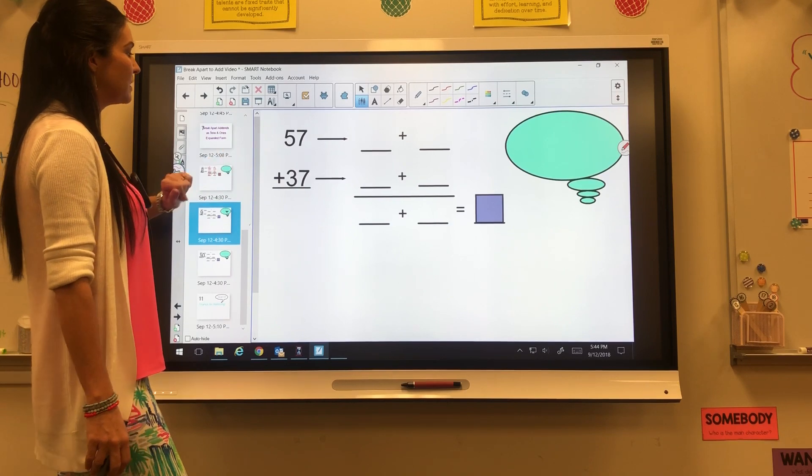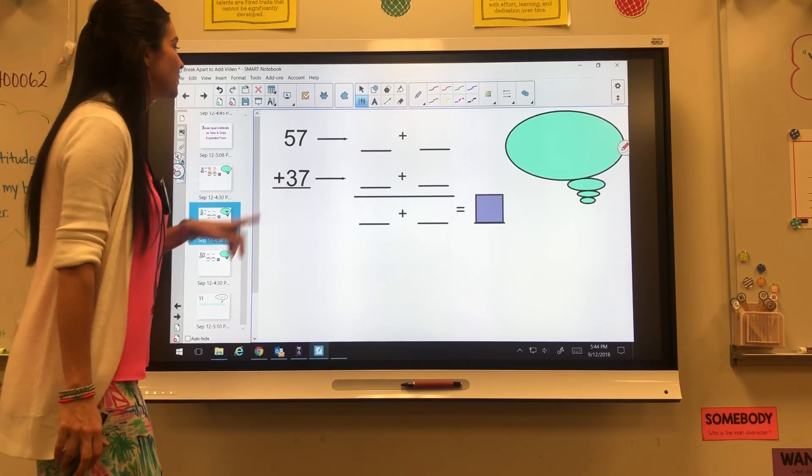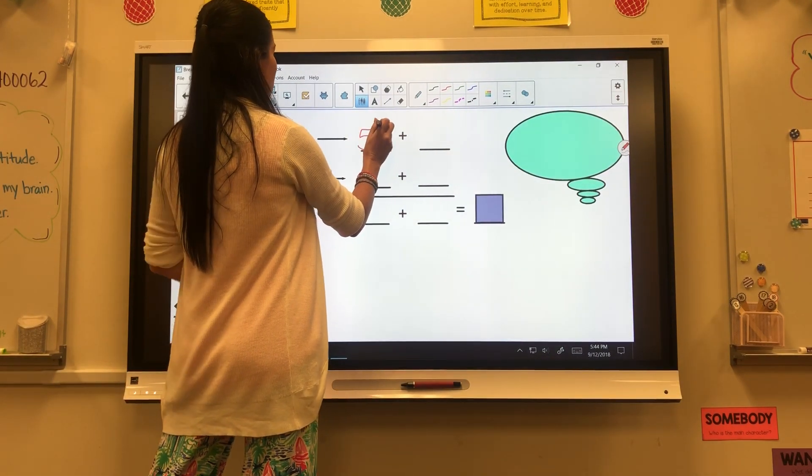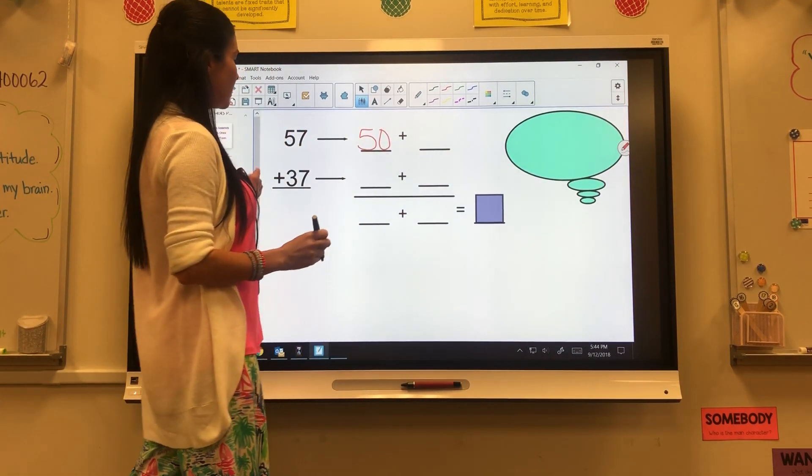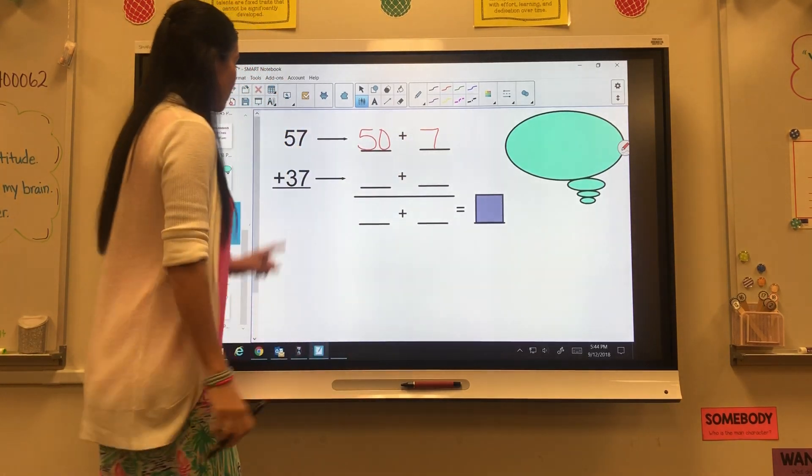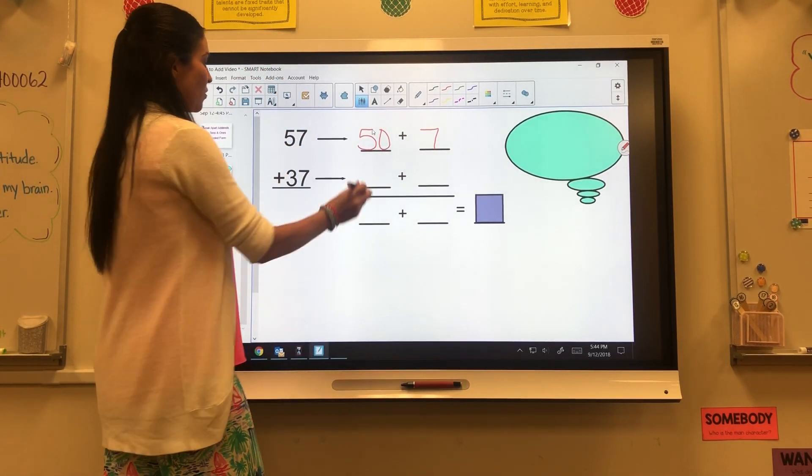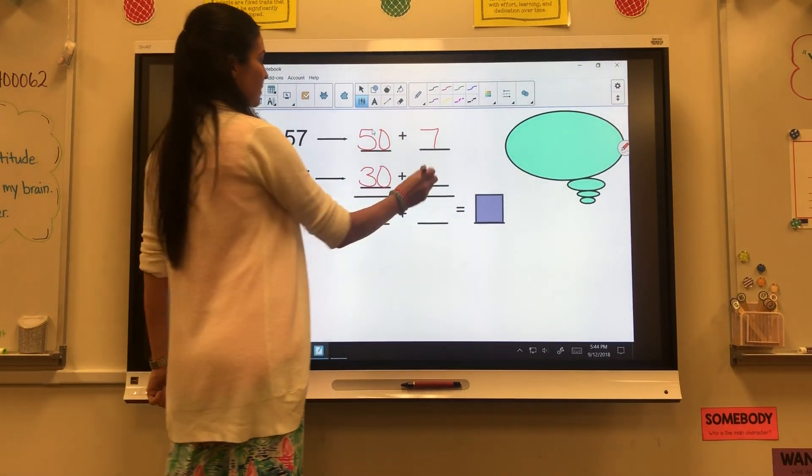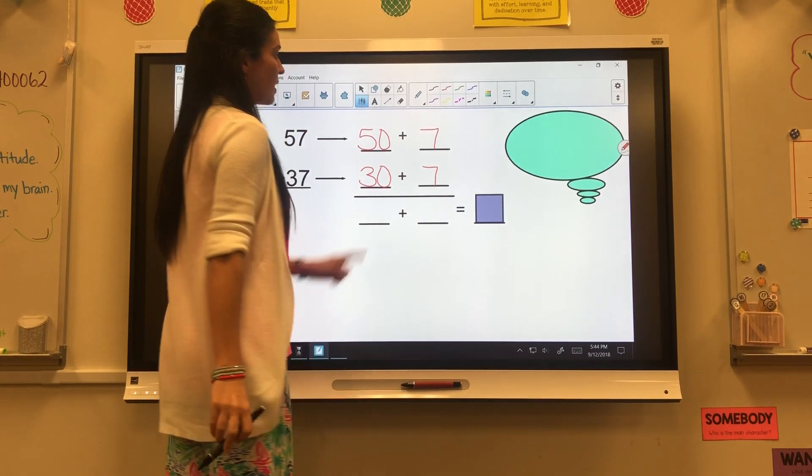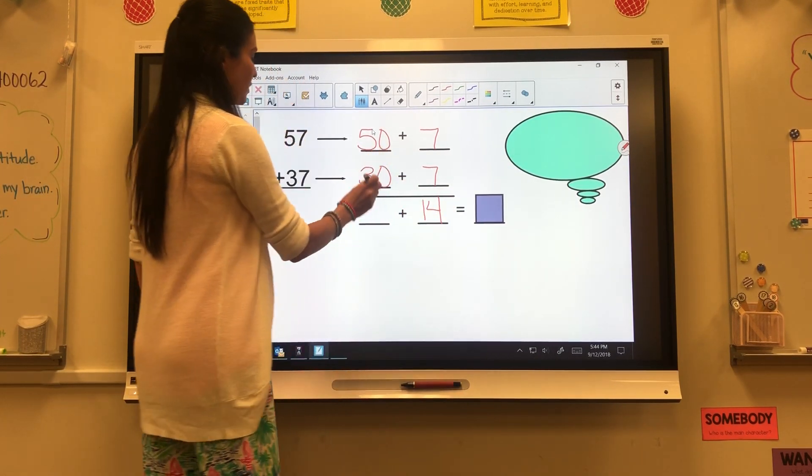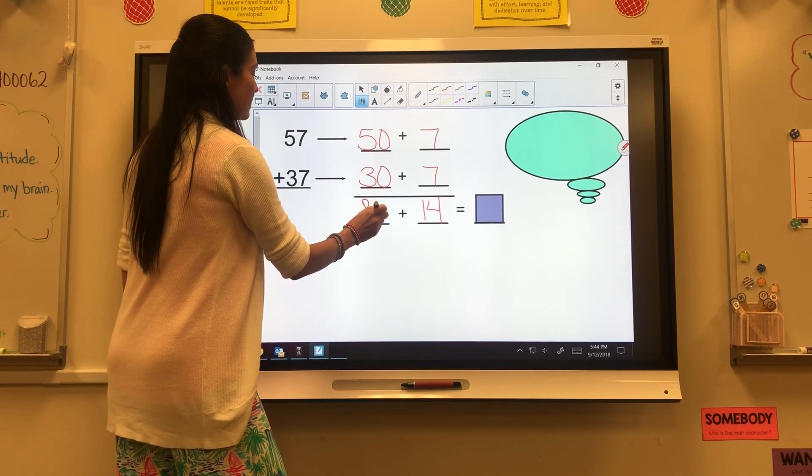Next one, 57 plus 37. Same thing. We're going to break this apart into tens and ones. The value of my 5 is 50 because it's in the tens place. The value of my 7 is 7. 37. The value of my 3 in the tens place is 30 plus 7 ones. 7 plus 7 is 14. 50 plus 30 is 80.